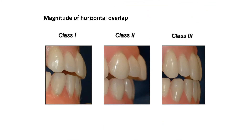This shows the class 1, class 2, and class 3 relationships in terms of horizontal overlap. In class 1 the overlap is 1–2 mm; in class 2 it will be more; and in class 3 it will be less.